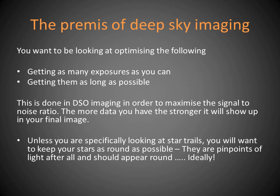Deep sky imaging works by getting as much data and as much exposure as you can on a target in the sky that you actually can't see — nine times out of ten you can't see it. The light from these targets has taken many millions or thousands of years to arrive here; they're very very faint. Most of the time, apart from targets like Andromeda or the Orion Nebula, they are invisible to our eyes. So you want to get as many exposures as possible, for as long as possible, to ensure your signal-to-noise ratio is sufficient so that when you start processing you will actually see something on screen.